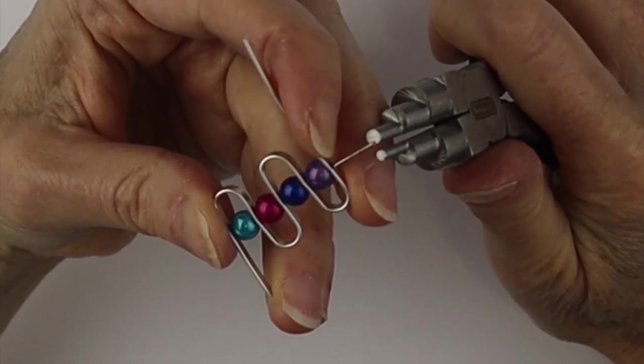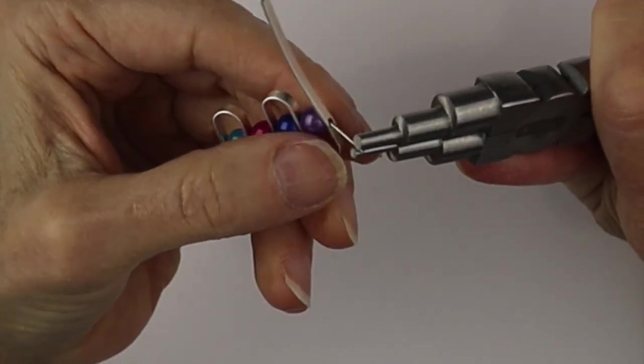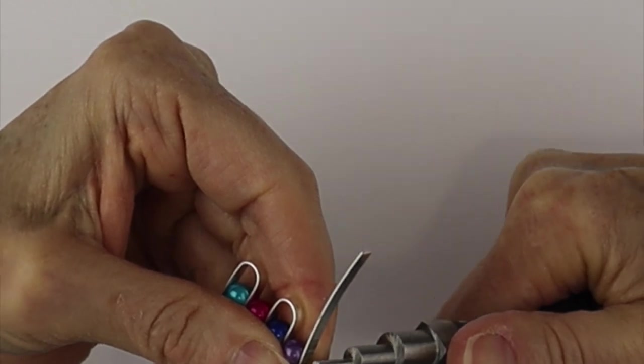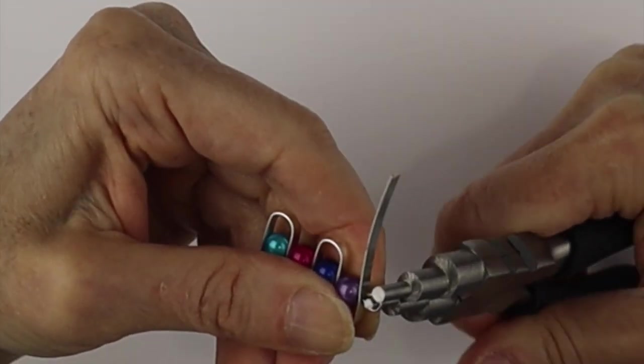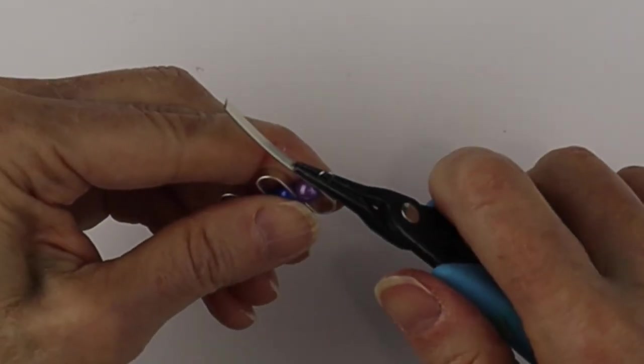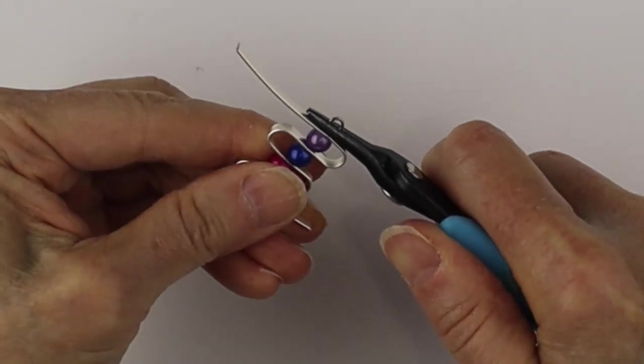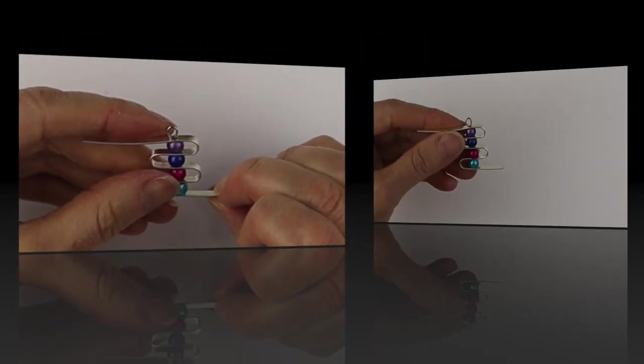Cut it to about three eighths to half an inch and use our looping pliers to do a little centered loop at the top. Just wiggle it around until that little gap is closed and then just press it flat with the flat pliers. These are the tweezer nose pliers from Xuron.